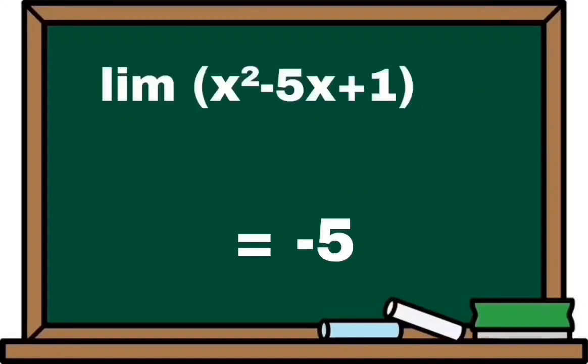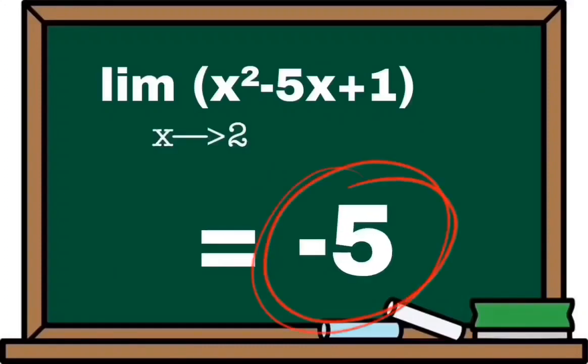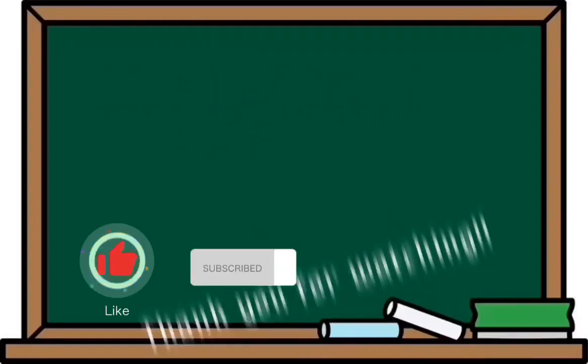So, the limit of x squared minus 5x plus 1 as x approaches to 2 is negative 5.